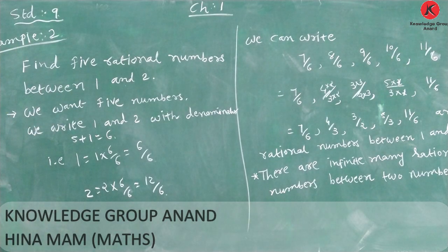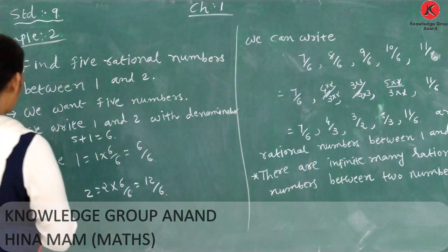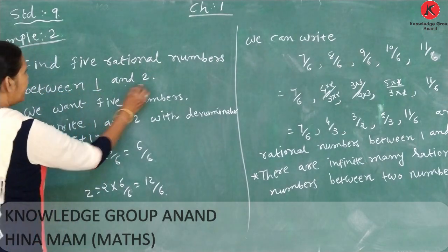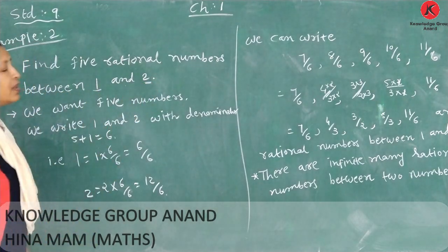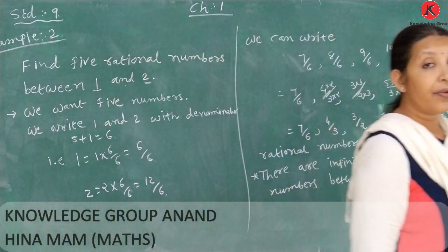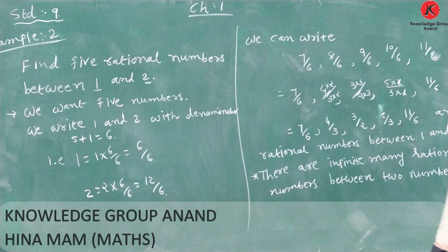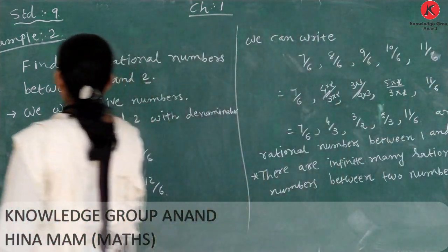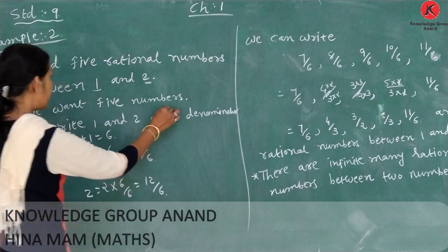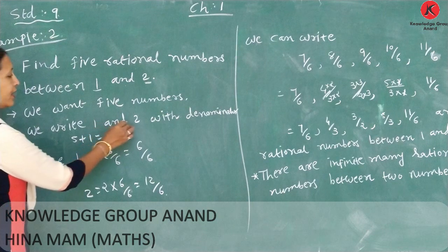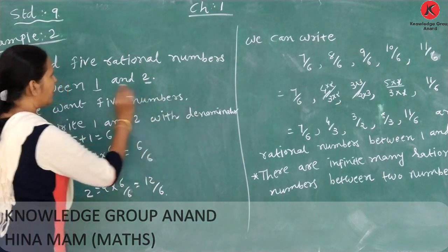Example number 2: Find 5 rational numbers between 1 and 2. In this question, we want to find 5 rational numbers between 1 and 2. We want 5 numbers. So we write 1 and 2 with a common denominator.